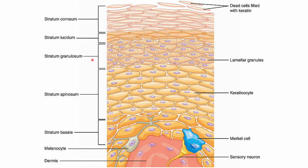Moving up, next we have the stratum granulosum, where we find lamellar granules. The stratum granulosum is anywhere between three to five cell layers — and by the time cells come here, they are dead. The next layer, found in thick skin such as our palms and soles of our feet, about two to three cell layers thick, we have the stratum lucidium. After that, the superficial top layer — this is what we're touching, what you're putting makeup and moisturizers on — is the stratum corneum, which is 15 layers and greater. So we have: stratum basale, stratum spinosum, stratum granulosum, stratum lucidium, and stratum corneum.